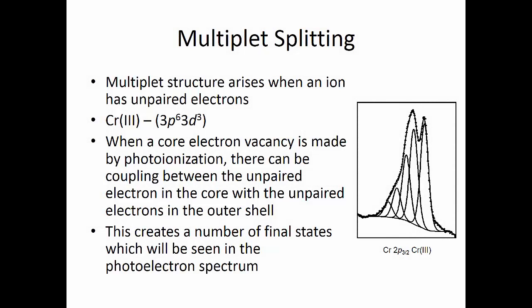We're going to look at the fitting of the chromium 2p3 halves peak. The big thing with transition metals is that there's something called multiple splitting that can occur. This happens when a compound or an ion has unpaired electrons. For example, chromium 3+ is 3p6 3d3, so it has three unpaired d-electrons. When a core electron vacancy is made by photoionization, you get coupling between the unpaired electron in the core and the unpaired electrons in the outer shell, which shows up as a number of final states visible in the photoelectron spectrum.